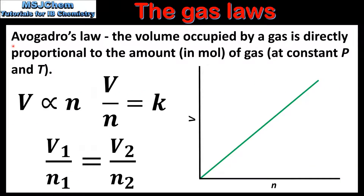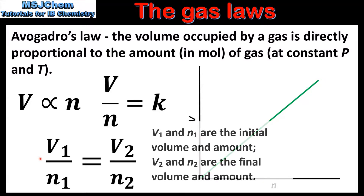The next gas law is the relationship between volume and amount in moles at constant pressure and temperature, also known as Avogadro's law. This states that the volume occupied by a gas is directly proportional to the amount in moles of gas. In equation form: V is directly proportional to N, or V over N equals a constant K. On the right we have a graph of volume against amount in moles, showing direct proportionality. Avogadro's law can also be represented as V1 over N1 is equal to V2 over N2.